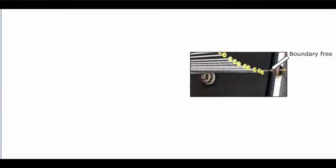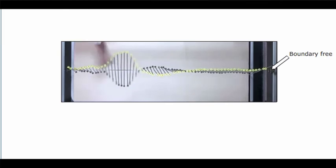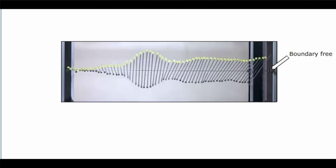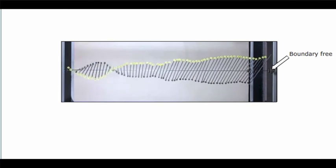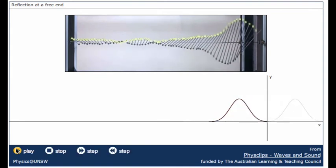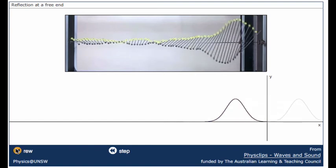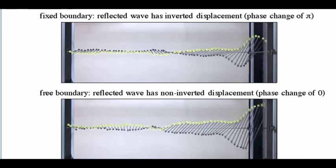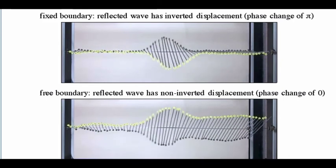All right, what if the end is not fixed but completely free to swing? So we disconnect it, send the wave pulse along, and now the reflection comes back on the same side. The reflection at a free end is not inverted. Well, we can't do that one on a string, but in fact, reflections at a free end are rather important in musical wind instruments.